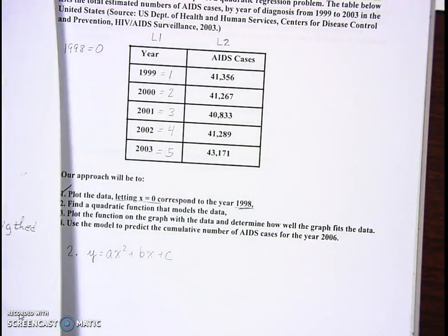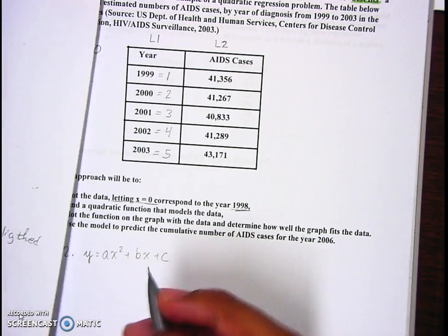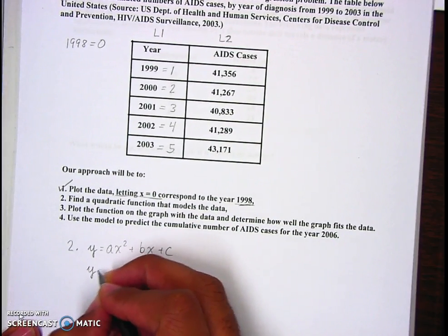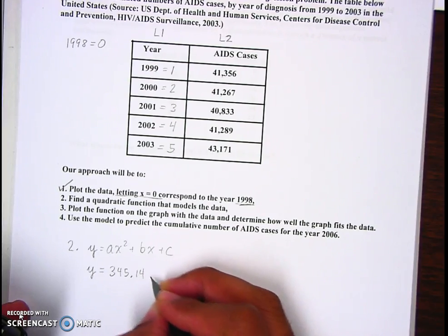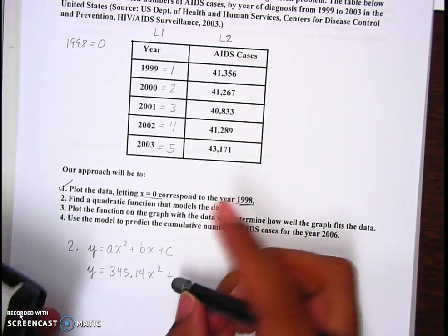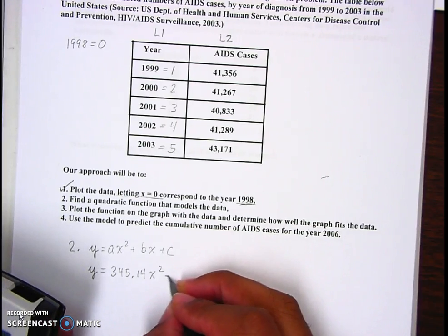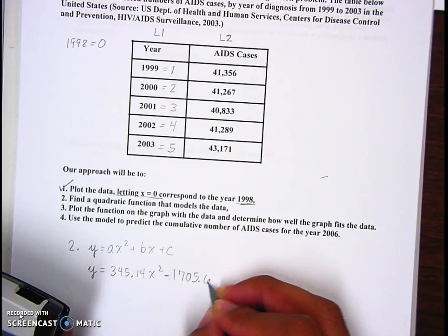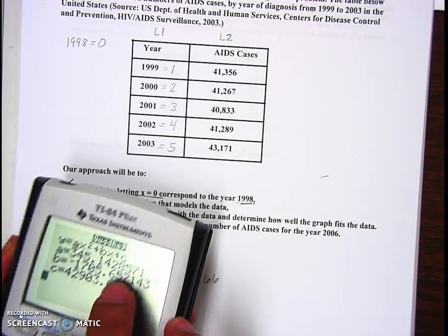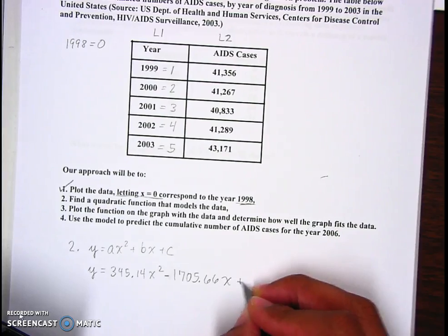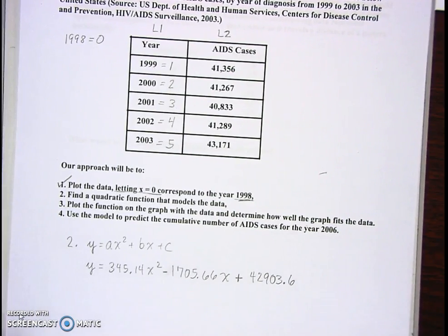For number two, write down the equation: ax squared plus bx plus c. They give you a, b, and c, so we fill those in and that's our equation. We're going to round it to two decimal places - two places after the decimal for each one. If you don't round correctly, the problem's wrong.